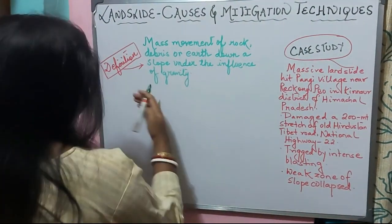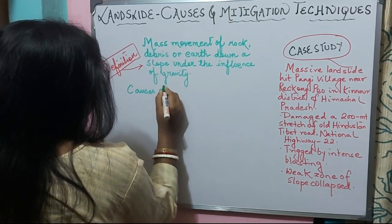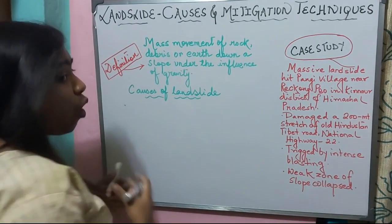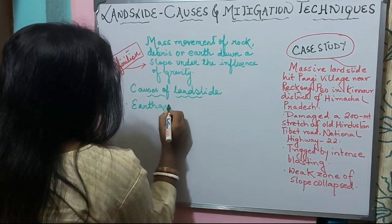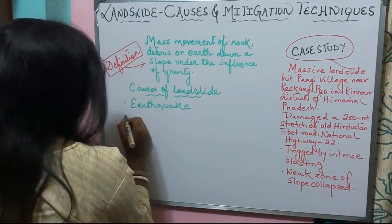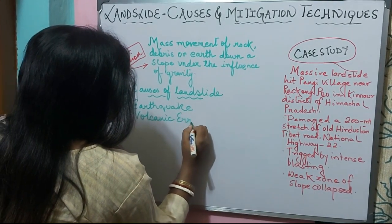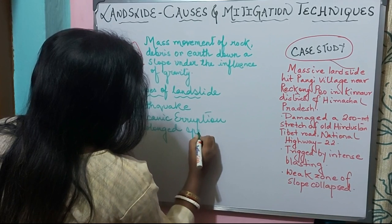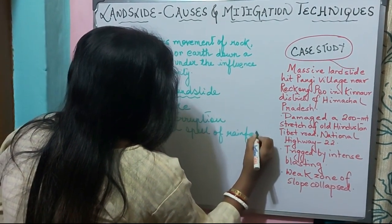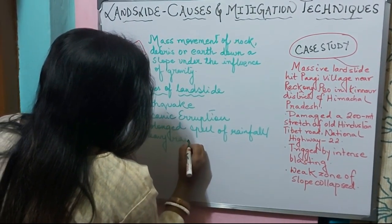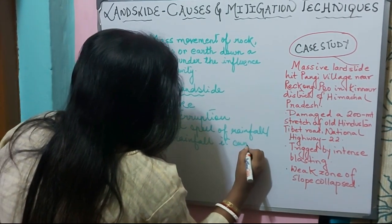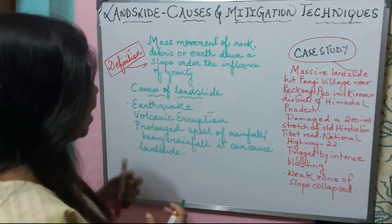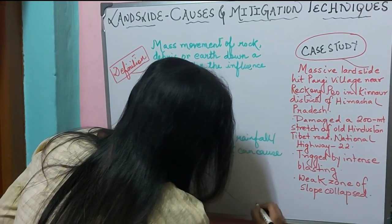Now let us know what are the causes of landslide. Landslide is caused or occurs in conjunction with an earthquake — that means when an earthquake occurs it can lead to a landslide. When there is a volcanic eruption, it can also cause a landslide. Due to a prolonged spell of rain, or heavy rainfall, it can cause a landslide.